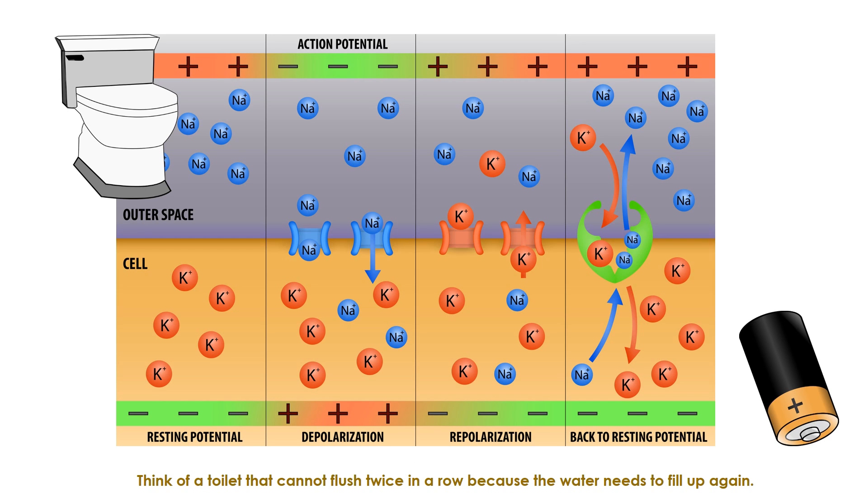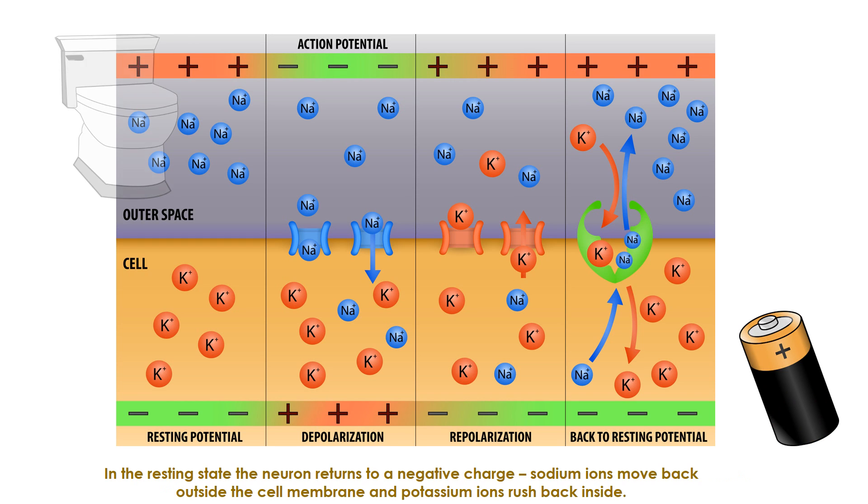Think of a toilet that cannot flush twice in a row because the water needs to fill up again. In the resting state, the neuron returns to a negative charge. Sodium ions move back outside the cell membrane and potassium ions rush back inside.